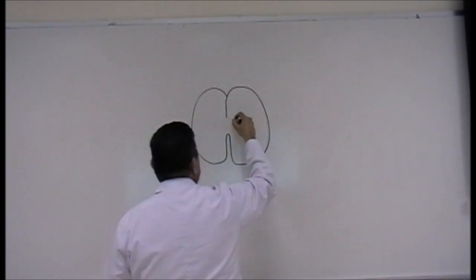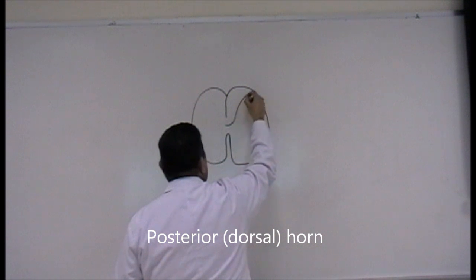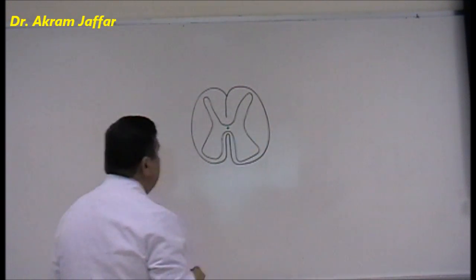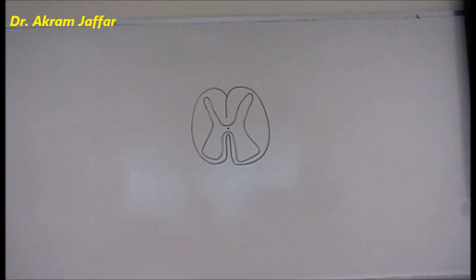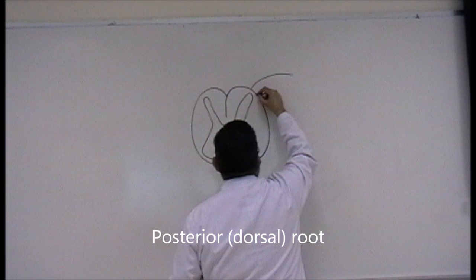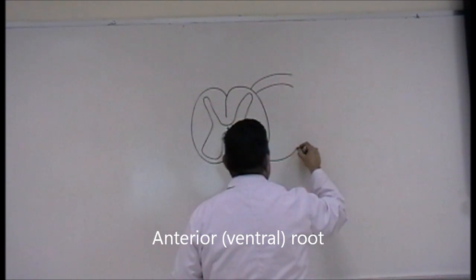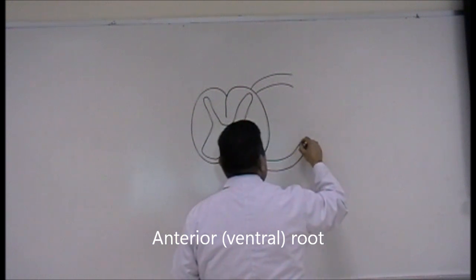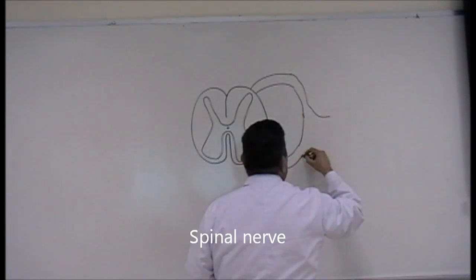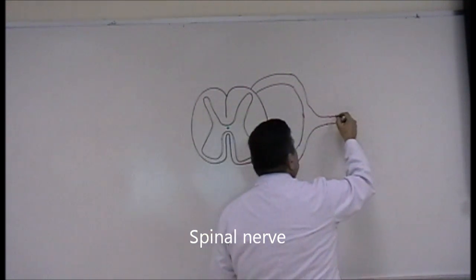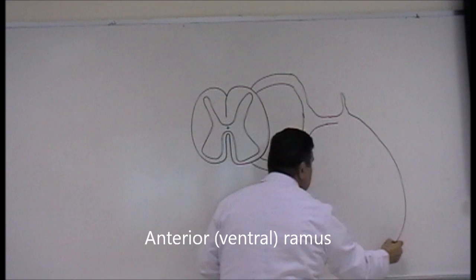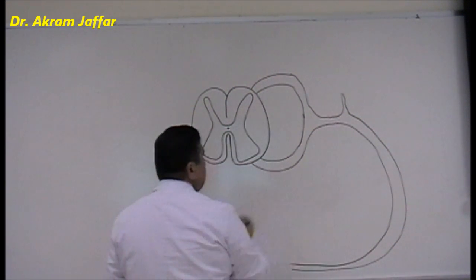Within the spinal cord there is the gray matter with a posterior horn, anterior horn, and the central canal. Attached to the spinal cord are the spinal nerves. Each spinal nerve has a posterior root and an anterior root. These roots meet together at the intervertebral canal to form a spinal nerve, which then divides into a posterior ramus and an anterior ramus.